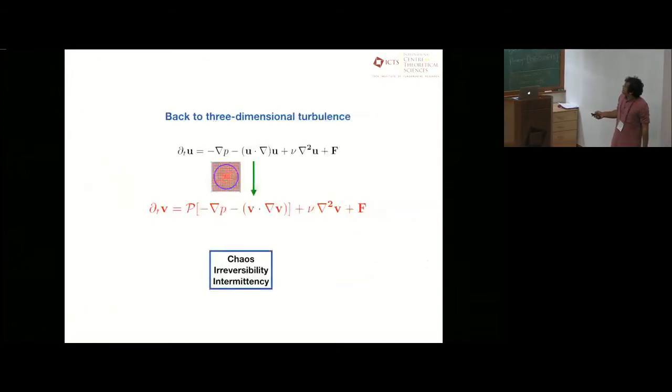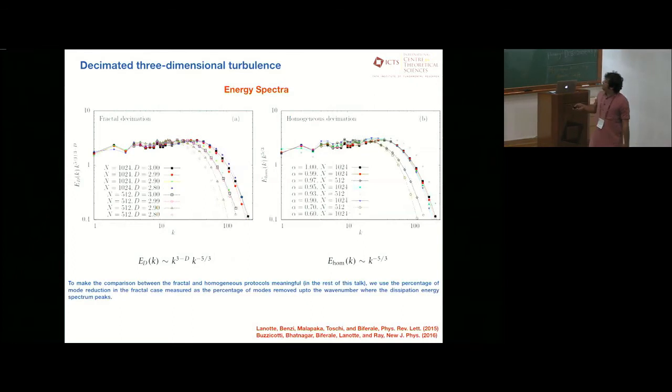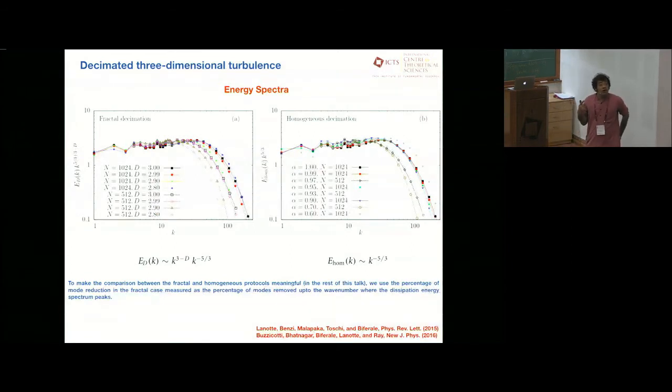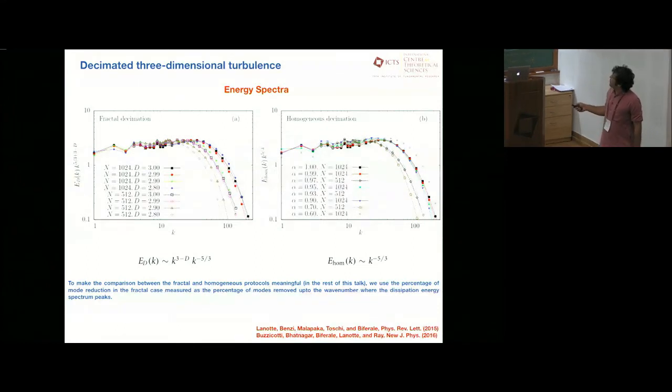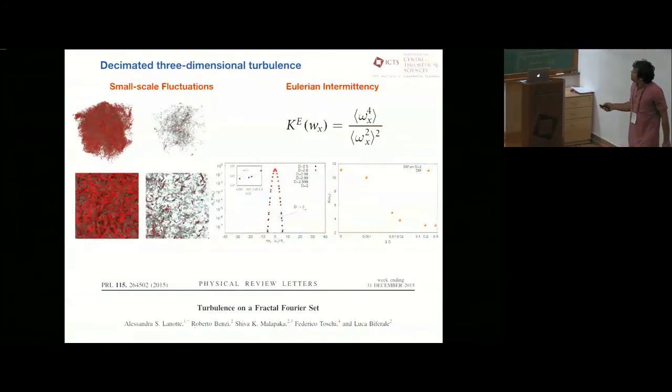So back to three-dimensional turbulence, we can begin with the Navier-Stokes equation in 3D. Then we choose a projection, a mask, which could be random, or a scale-dependent way. And then we eventually solve this decimated Navier-Stokes equation. So let's begin with some results. So first, let's look at energy spectrum. When you actually play this game, on the left, I'm talking about fractal decimation, going down in dimension from 3 to 2.8, and here randomly decimated systems. As one would expect, it doesn't do anything to the energy spectrum. And that's a secondary check on the fact that your conservation laws are valid.